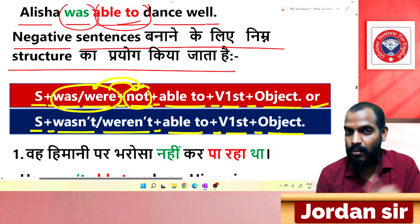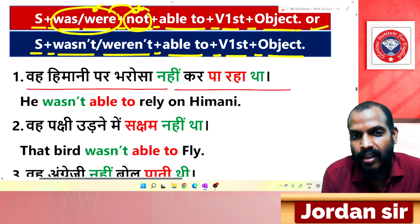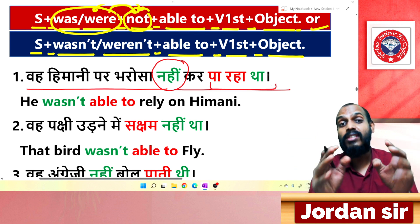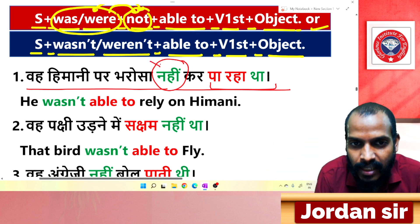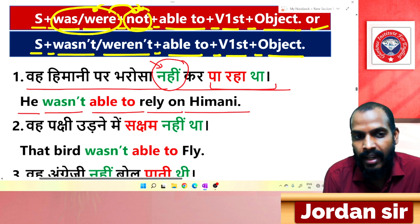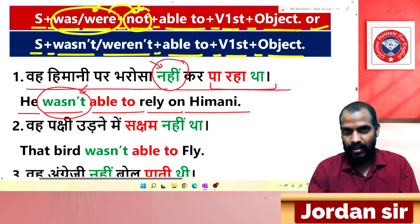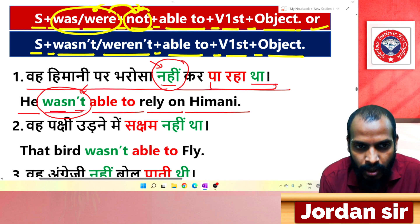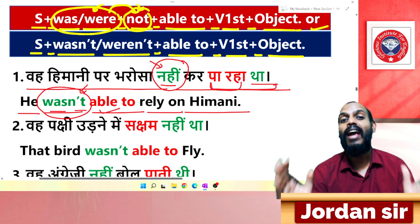First negative example: 'वह हिमानी पर भरोसा नहीं कर पा रहा था.' The word 'नहीं' tells us it is negative, and 'पा रहा था' gives us 'was + able to'. Translation: 'He wasn't able to rely on him.' 'Wasn't' is the contraction of 'was not'. From 'पा रहा' comes 'able to'.